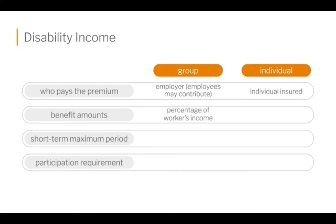The benefit amounts are based usually on a percentage of the worker's income for group plans. On individual, it's a flat amount of benefit that is determined. Short-term maximum periods on group are usually 13 to 26 weeks — 26 weeks being half of a year, six months. The individual short-term maximum periods are six months to two years. So there's a difference there — remember that.